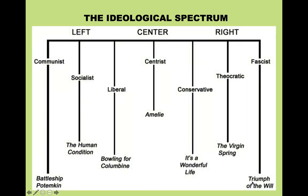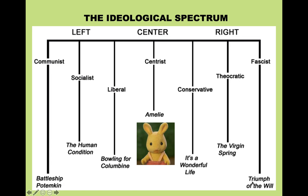So the ideological spectrum is really just to give you an idea of where things tend to fall. You'll definitely see with the movie we watched this week that these things aren't absolute. If you look from left to right, things are going to be where you'd expect them to be. All the way on the left, you have communism; all the way on the right, you have fascism. A communist film would be Battleship Potemkin, which we've watched a snippet of. On the fascist side, we have Triumph of the Will, the Leni Riefenstahl film made for Adolf Hitler.